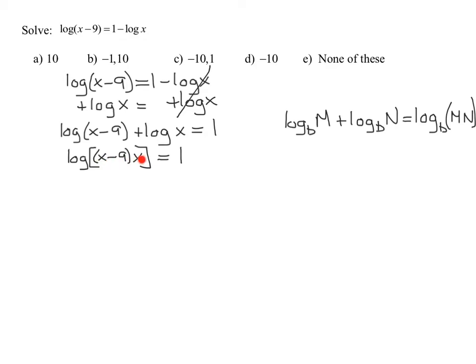I can simplify this a little bit by distributing the x into here. So I will get the common log of x squared minus 9x equals 1. Because remember, just x times x is x squared, x times negative 9 is negative 9x. Now remember, this is a common log, its base is 10.